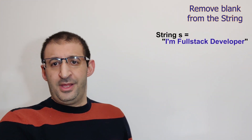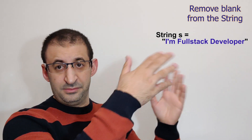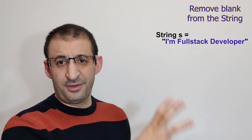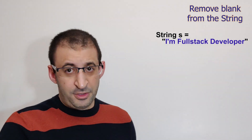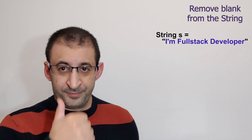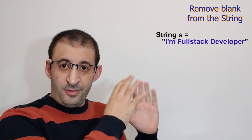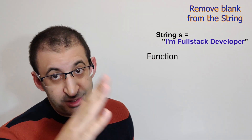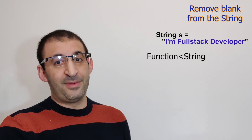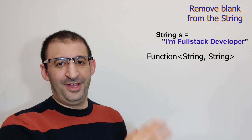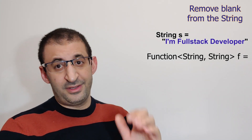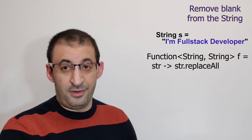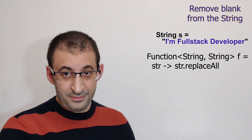For example, I have a string STL equal to 'I am full stack developer'. As you can see, there are blank characters or spaces between the words. So I will write my function: the input type parameter is string, and the return type parameter is also string. F equal STL, simple arrow — STL, and here I will use the method replaceAll of the string class.